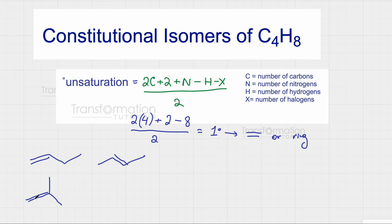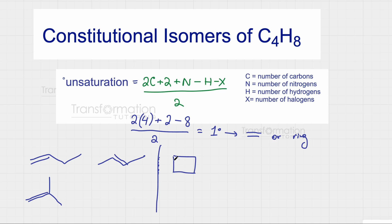Now I'll move on to rings, beginning with the biggest ring and going to the smallest. The first ring molecule I could have is a four-carbon ring — cyclobutane. I've used all of my carbons, and every carbon will have two hydrogens giving eight total, so that's a valid constitutional isomer.